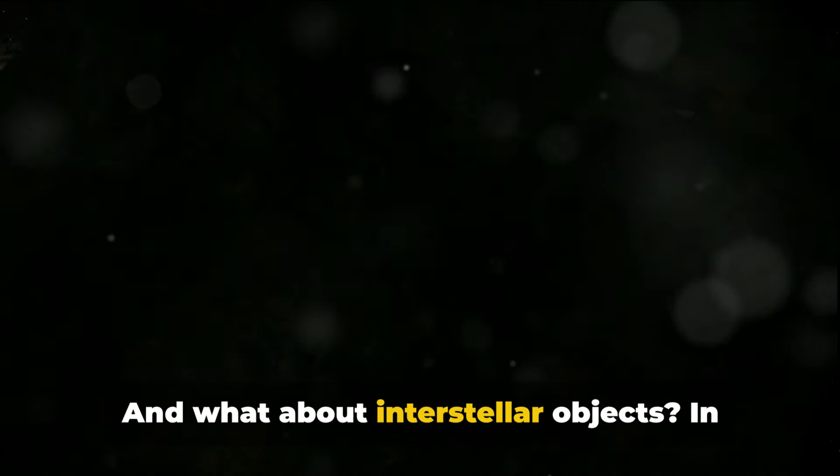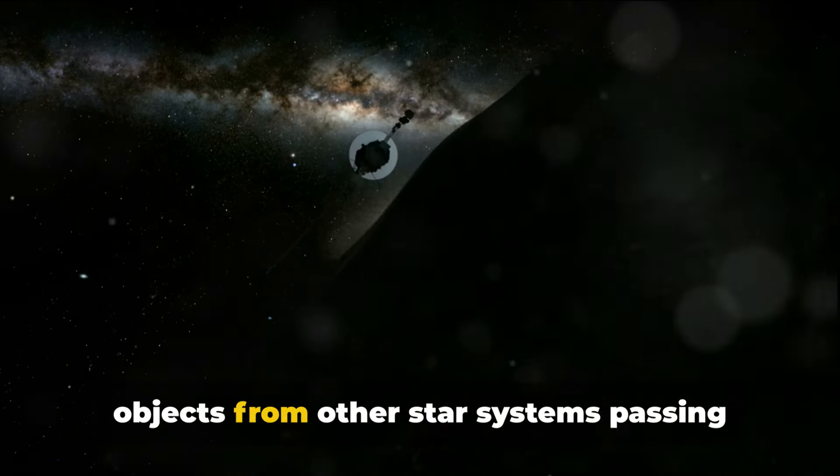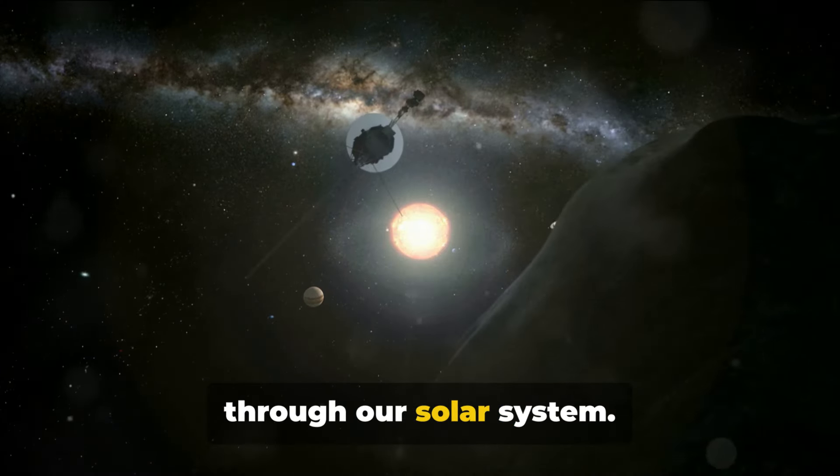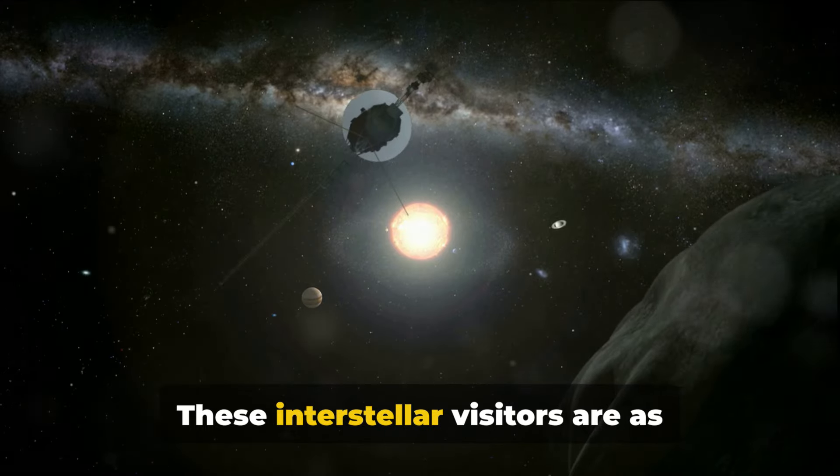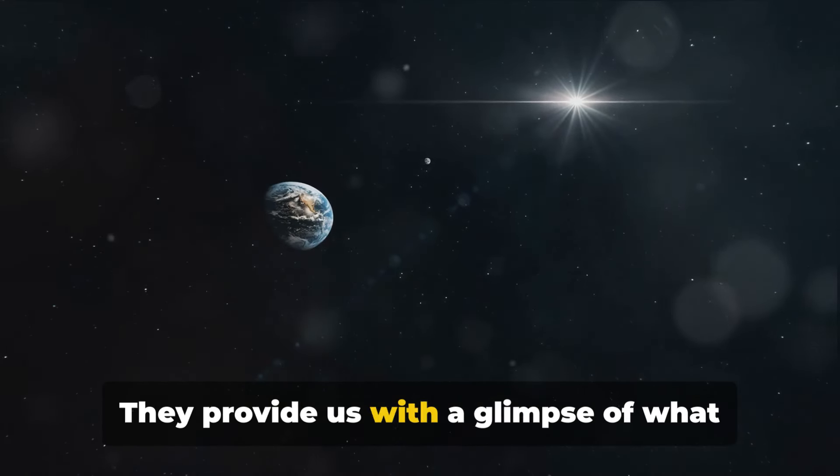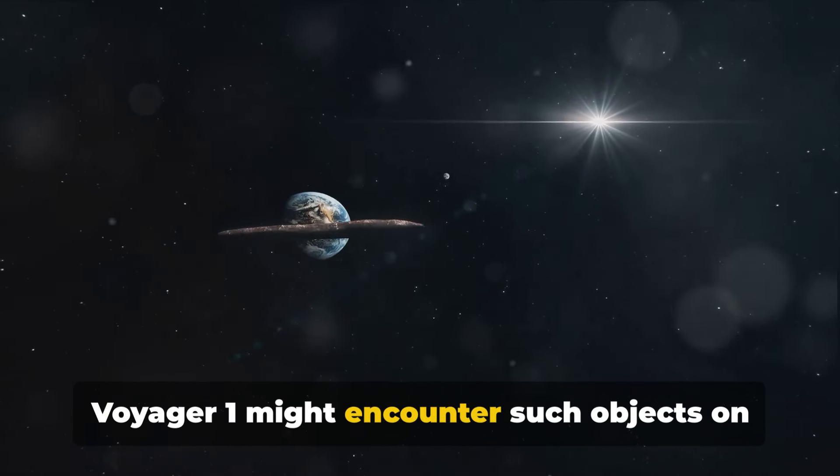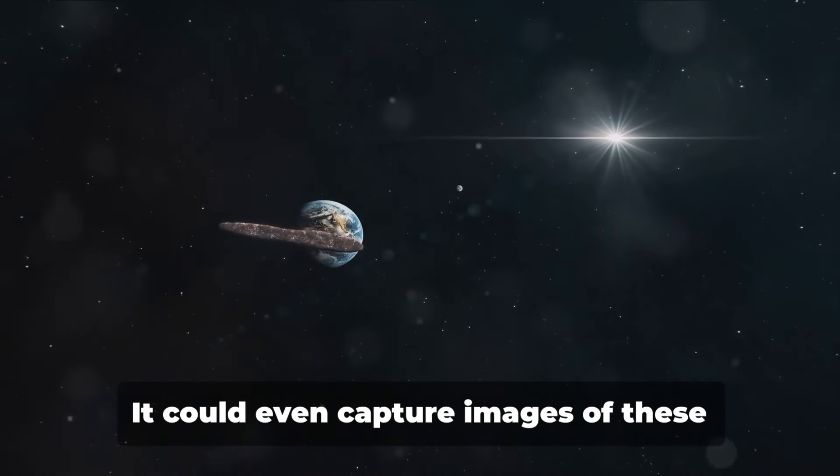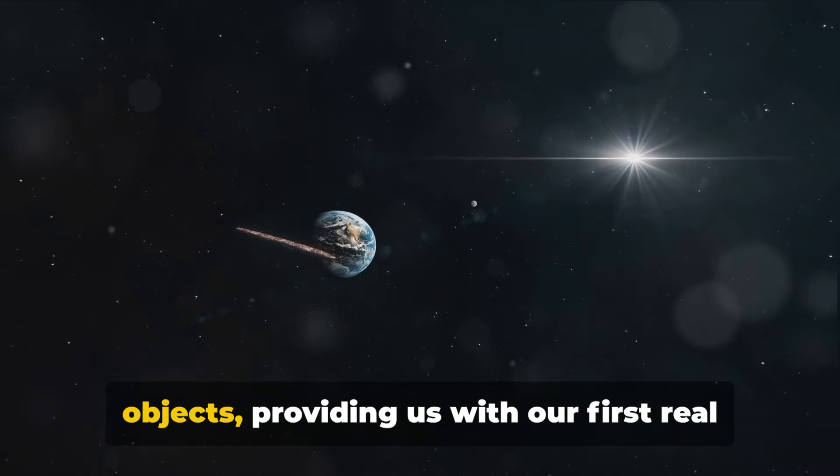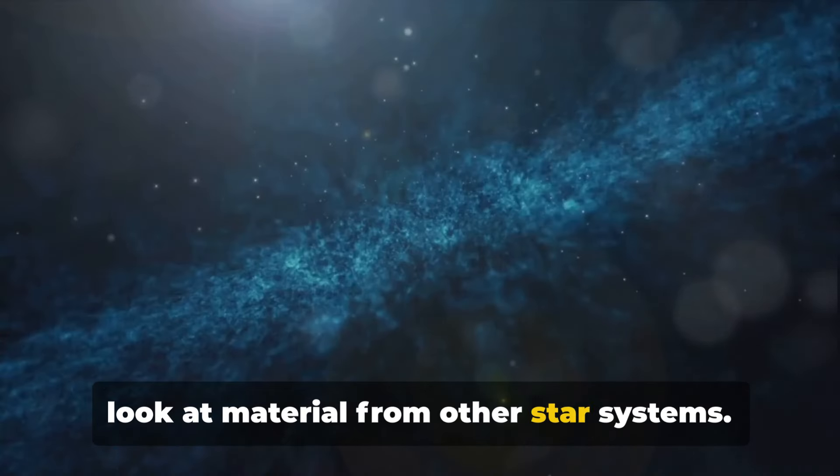And what about interstellar objects? In recent years, astronomers have detected objects from other star systems passing through our solar system. These interstellar visitors are as mysterious as they are exciting. Voyager 1 might encounter such objects on its journey. It could even capture images of these objects, providing us with our first real look at material from other star systems.